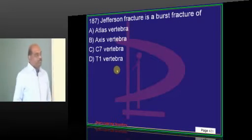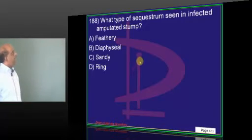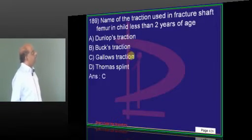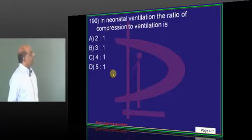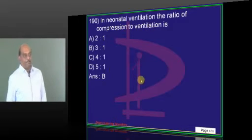Jefferson's is a burst fracture? Atlas. Ring. Amputated strumming? Ring. Gallows traction. It is a gallows traction in a child less than 2 years. 3 is to 1. 3 is to 1 is the neonatal ventilation to compression ratio.